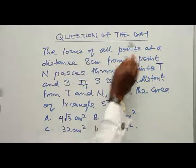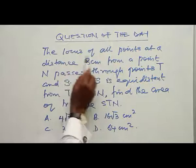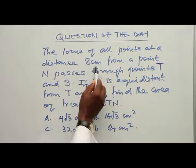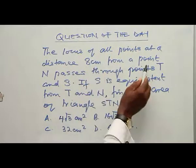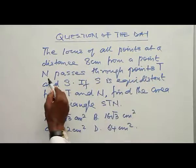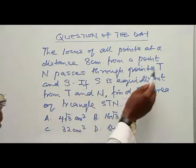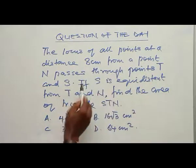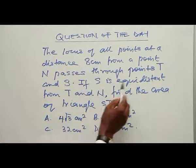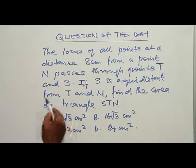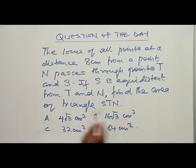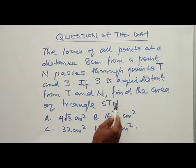Question of the day: The locus of points at a distance 'a' centimeters from a point N passes through points T and S. If S is equidistant from T and N, find the area of triangle STN.